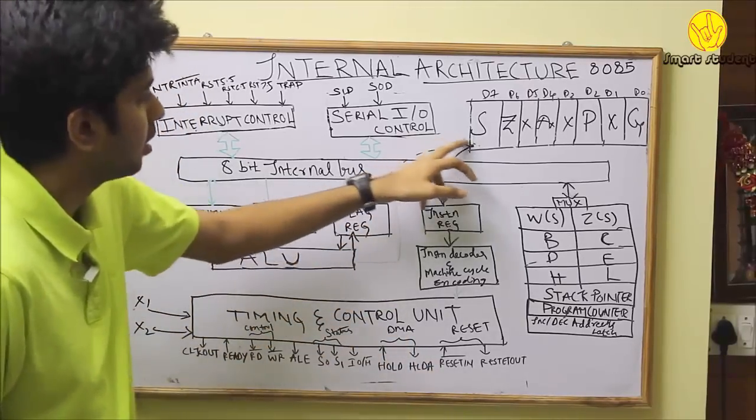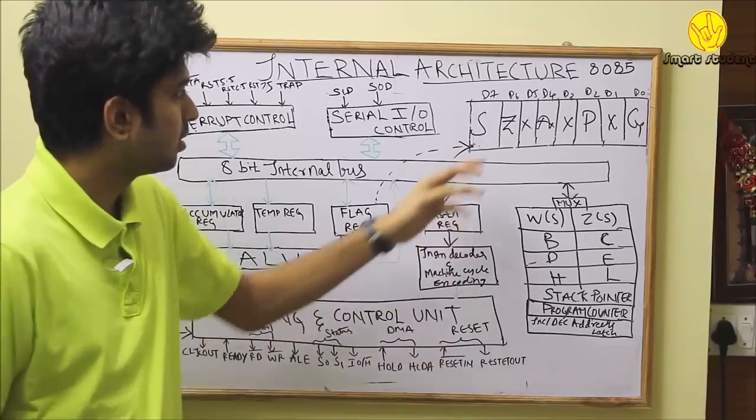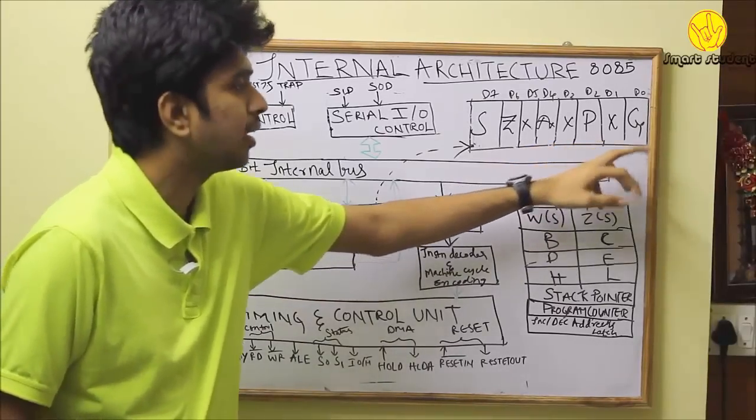For our convenience, the flag register is mentioned here. It consists of 5 D flip-flops and 3 undefined bits. It consists of a sign bit, zero bit, auxiliary carry bit, parity bit, and carry bit.